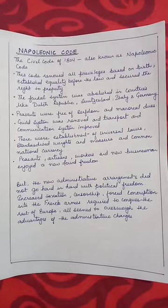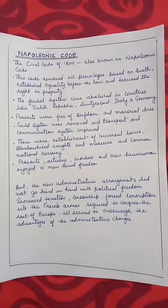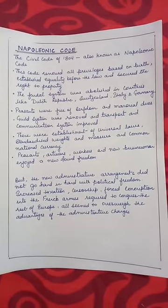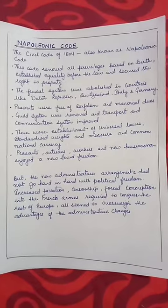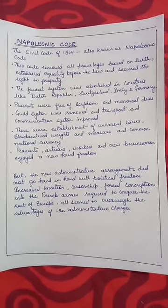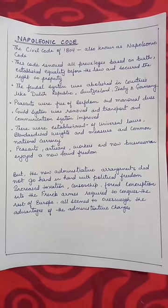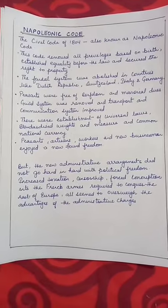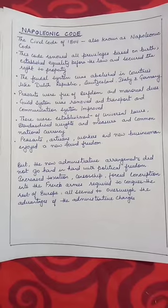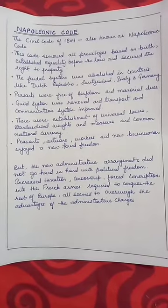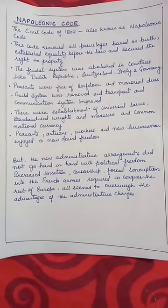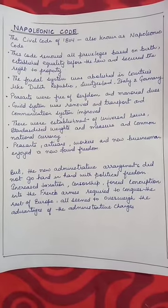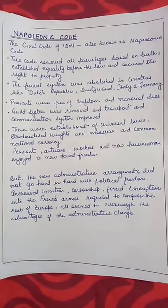The Civil Code of 1804, also known as the Napoleonic Code, removed all privileges based on birth, established equality before the law, and secured the right to property. The feudal system was abolished in countries like the Dutch Republic, Switzerland, Italy, and Germany. Peasants were freed from serfdom and manorial dues. Transport and communication systems were improved, with the establishment of universal laws, standardized weights and measures, and a common national currency.